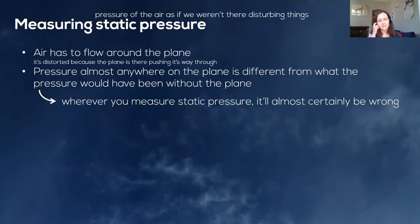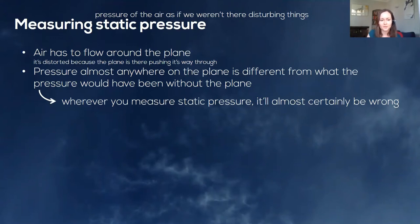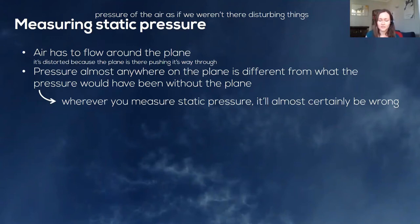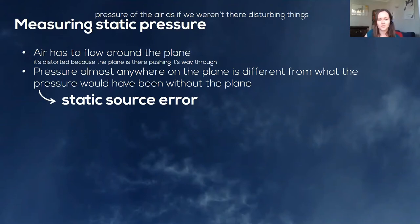We'll start with static pressure — the pressure of the air as if we weren't there disturbing things. Unfortunately we are disturbing things: we've pushed our way through the air and the air has to flow around the plane. So the pressure almost anywhere on the surface of the plane is going to be different from what it would have been had we not been there. That difference between the pressure you want to know and the pressure you actually measure is the static source error, and that's quite important to characterise properly.